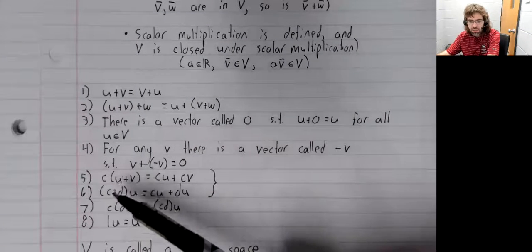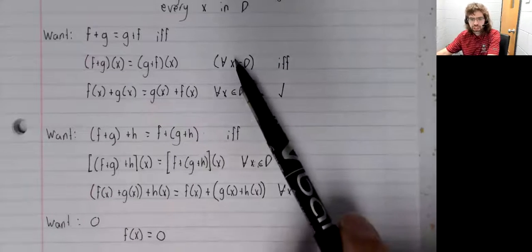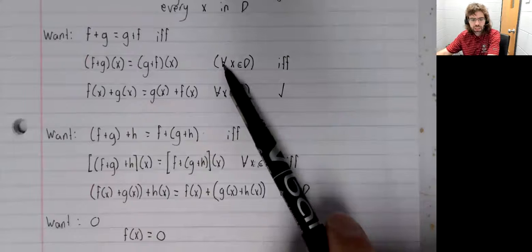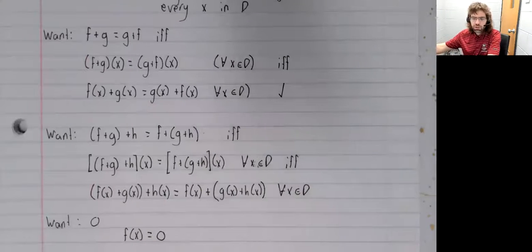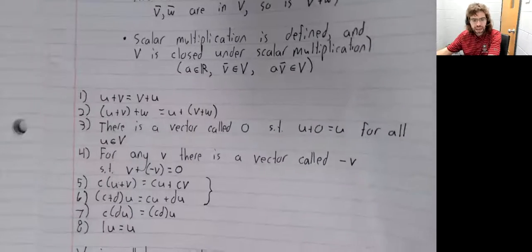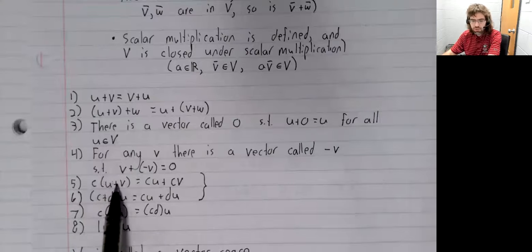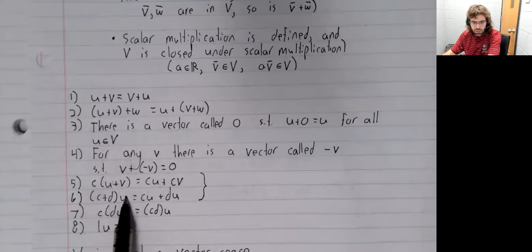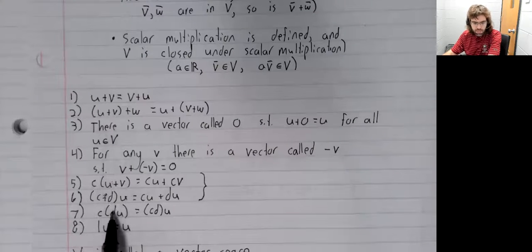you just take the statement about functions and turn it into a statement about real numbers. Because real numbers have all of these properties. Real multiplication distributes over addition. Real multiplication is associative. Real multiplication by one doesn't change anything.